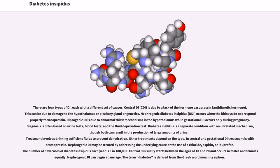There are four types of DI, each with a different set of causes. Central DI is due to a lack of the hormone vasopressin. This can be due to damage to the hypothalamus or pituitary gland or genetics.